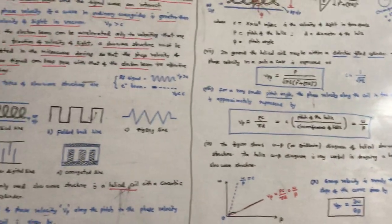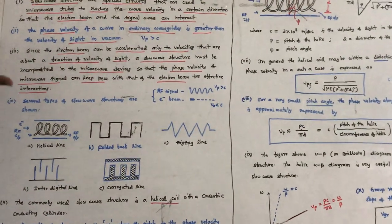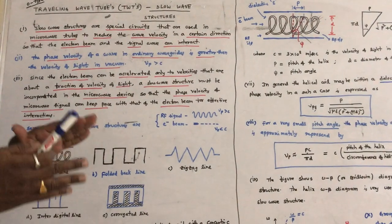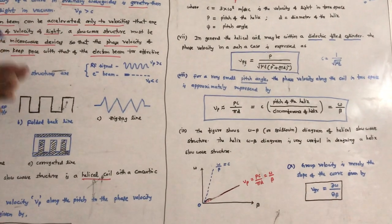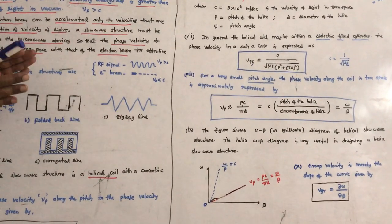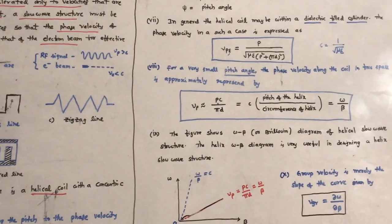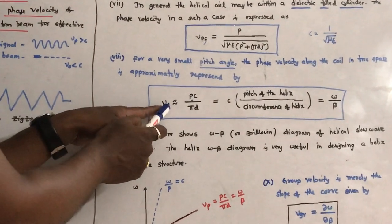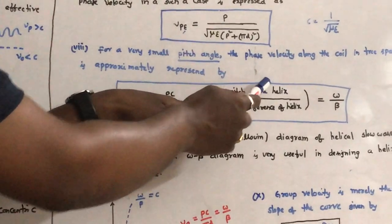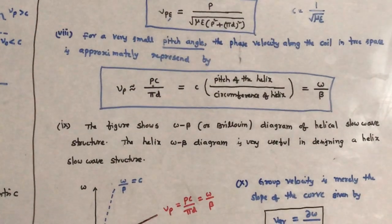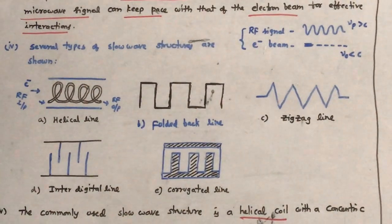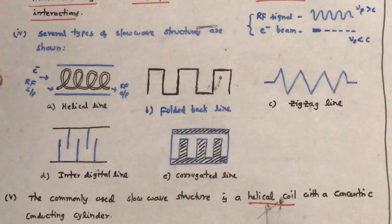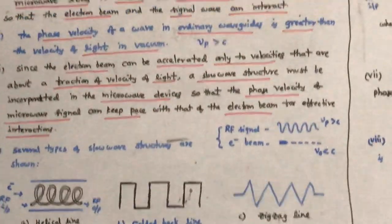What you have to write in the exam about slow wave structures: slow wave structures are special circuits which are used to reduce the velocity of the RF signal in a certain direction to make effective interaction between the RF signal and the electron beam. The important formula for phase velocity is Vp = c × (pitch of helix) / (circumference of helix). You also have to remember the different slow wave structures used in microwave tubes. This is all about slow wave structures — a very important question in the examination. Thank you.